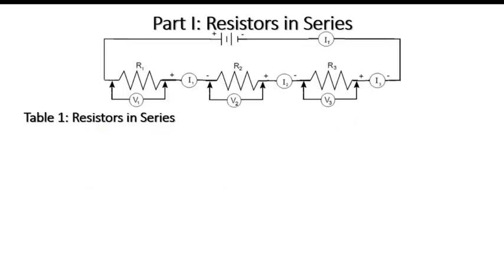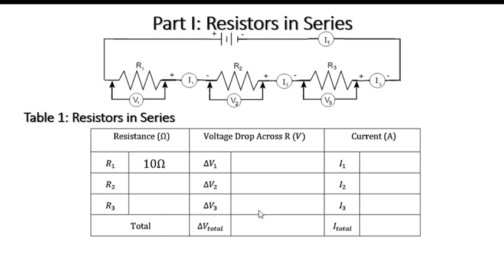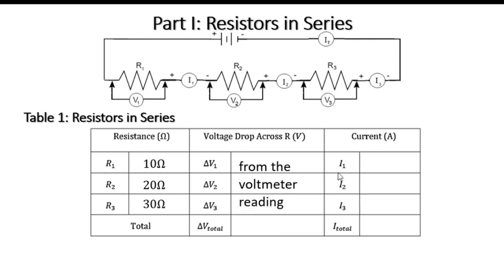Out of that, you must be able to read the following. R1, R2, and R3 have values of 10, 20, and 30 ohms. Out of the experiment, you must be able to read the voltage drop for each resistor — V1, V2, and V3 — and the total voltage drop for the entire circuit, obtained from the voltmeter reading. You will also determine the current passing through each resistor — I1, I2, and I3 — and the total current through the entire circuit, all obtained from the ammeter reading.